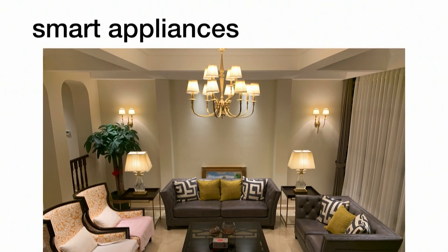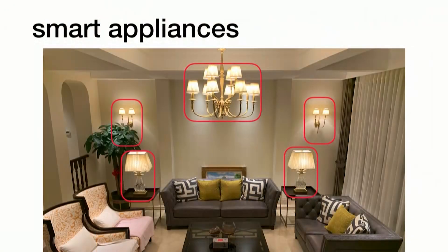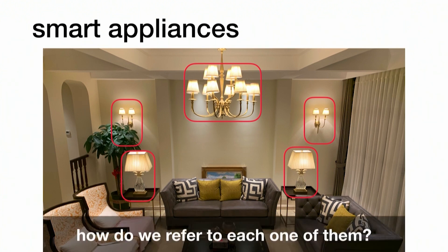Why do we want to talk with smart appliances? This is my home in China, and I spent a lot of time last holiday season to configure every single one of those lights to be a smart light. I put a bunch of HomePods so that my parents can interact with them. But their biggest concern is how do they remember the name of each one of those lights? You can call one of them ceiling lights, but do you call one of them left wall lights? It's really hard and definitely not for everyone. The question is how do we refer to each one of them?